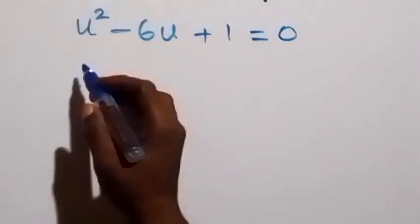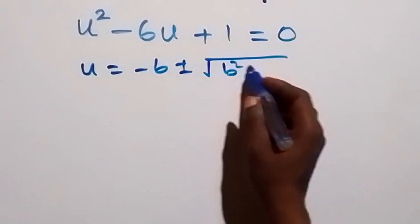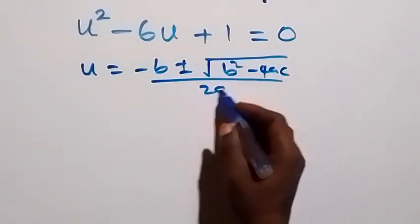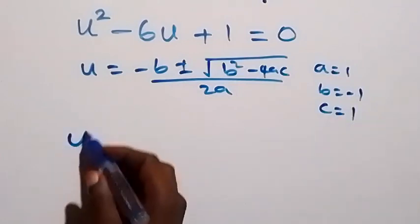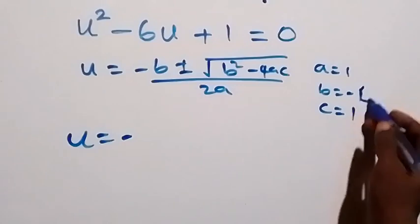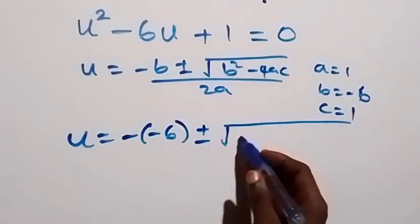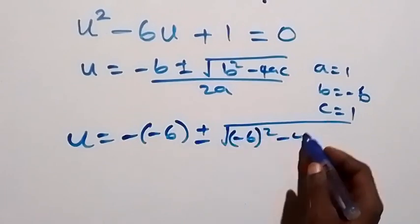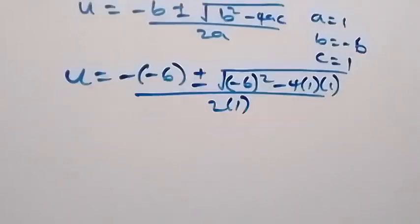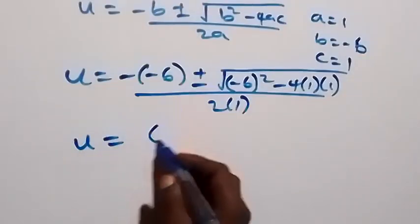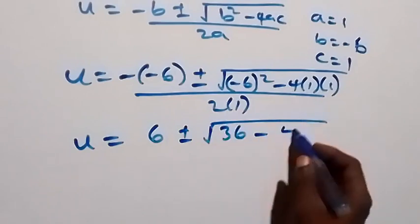Solve this quadratic equation using the quadratic formula: u equals to minus b plus or minus square root of b squared minus 4ac, over 2a. Here we have a equal to 1, b equal to minus 6, and c equal to 1. This gives us u equals to minus minus 6, then plus or minus square root of minus 6 squared, minus 4 times 1 times 1, then all over 2 times 1.